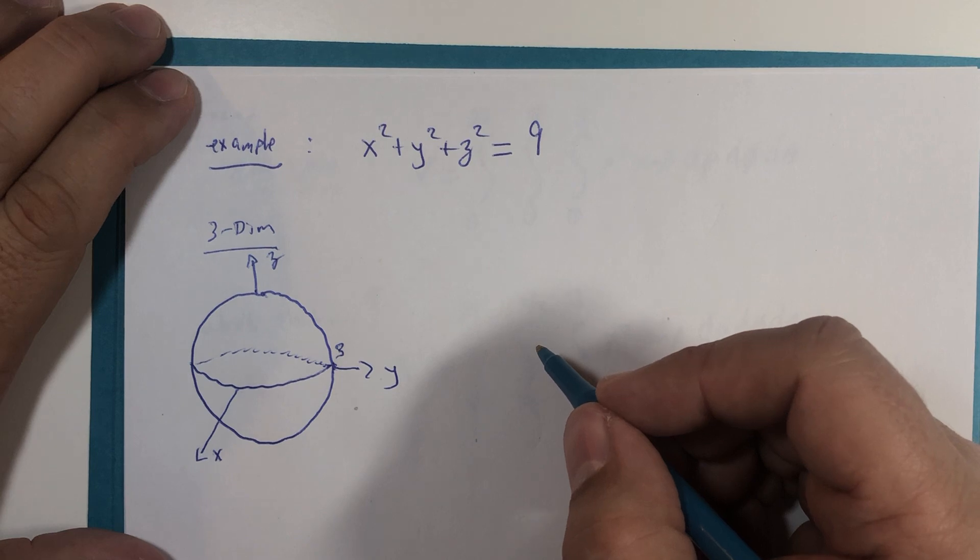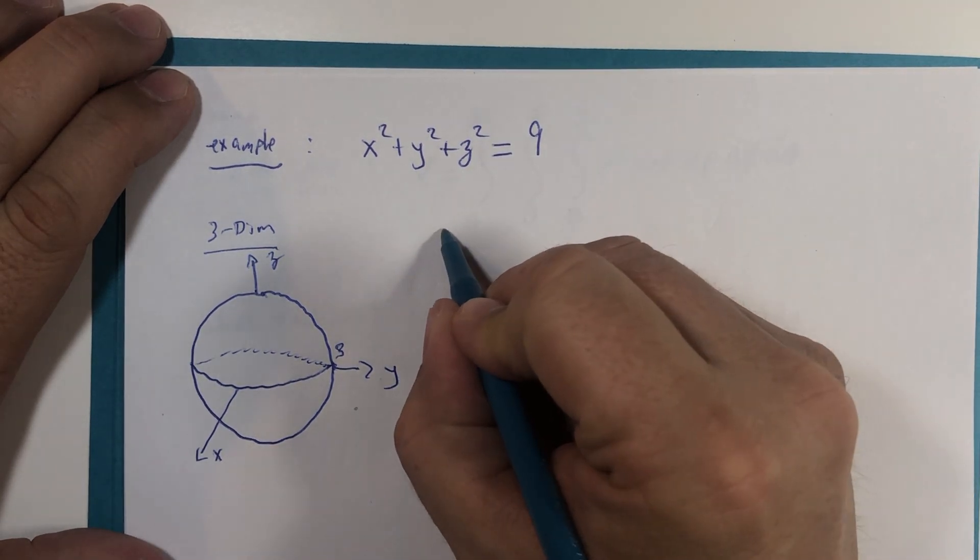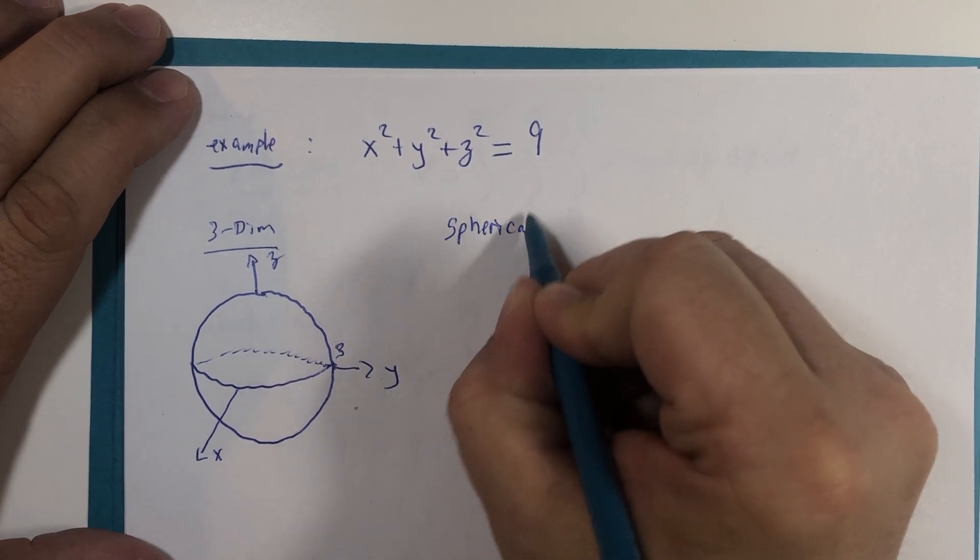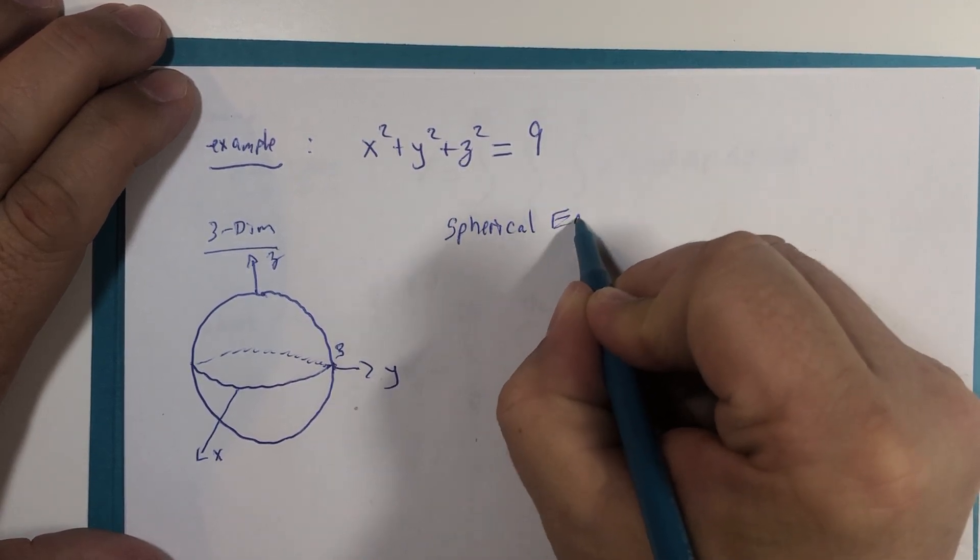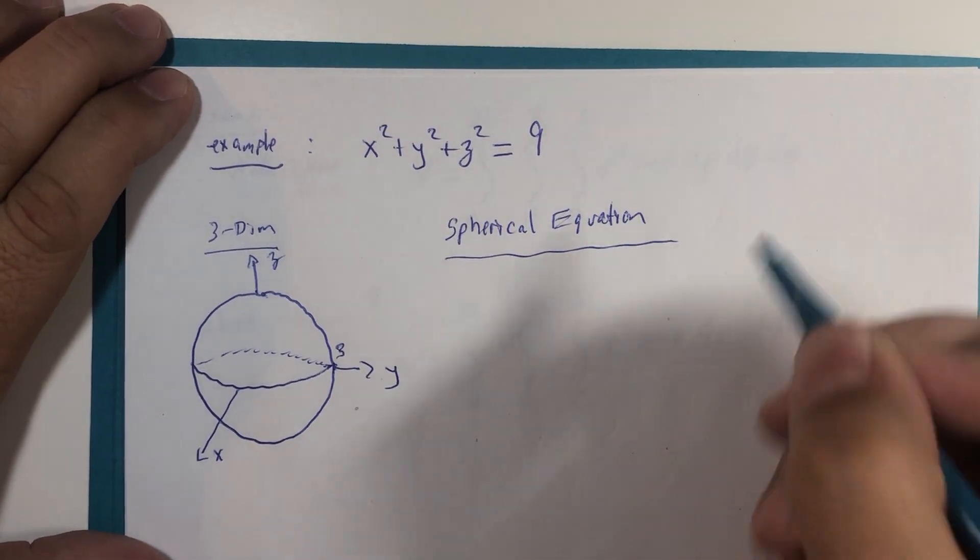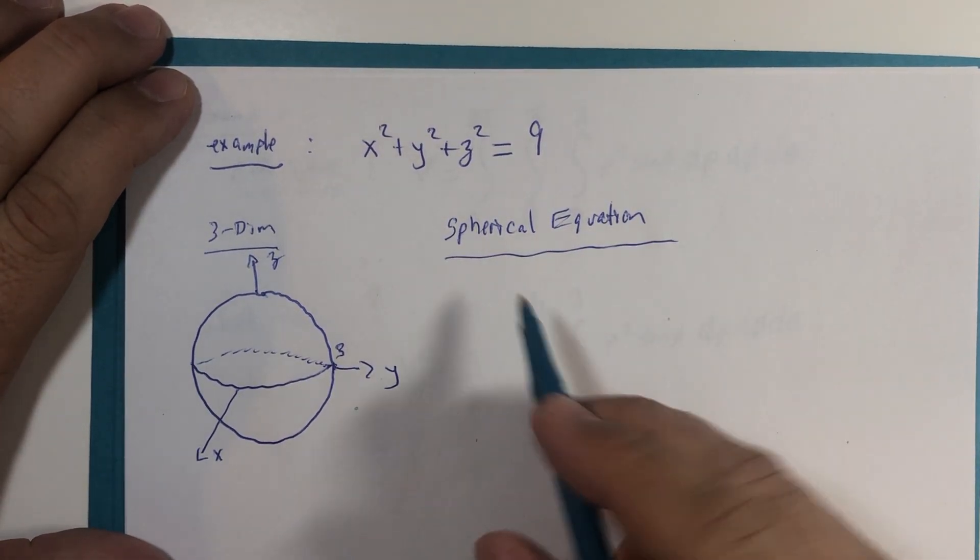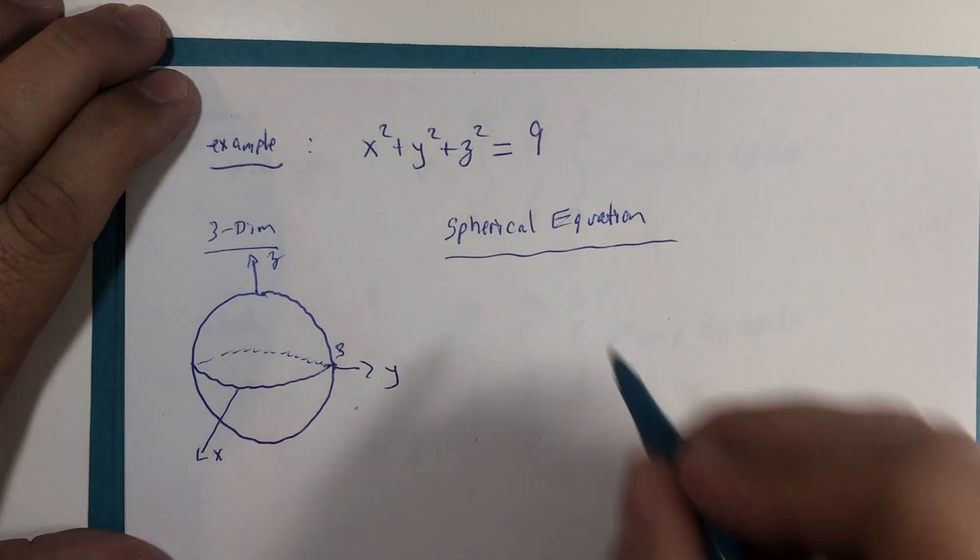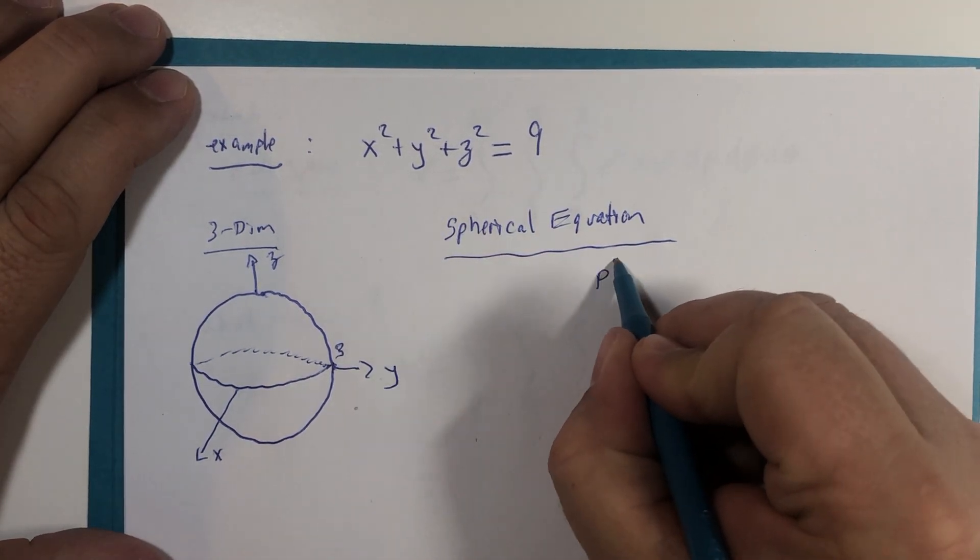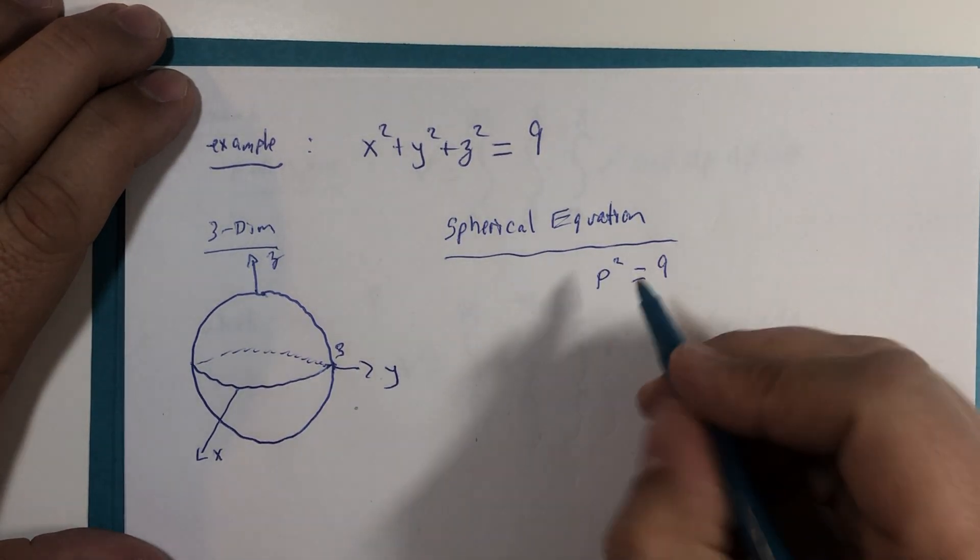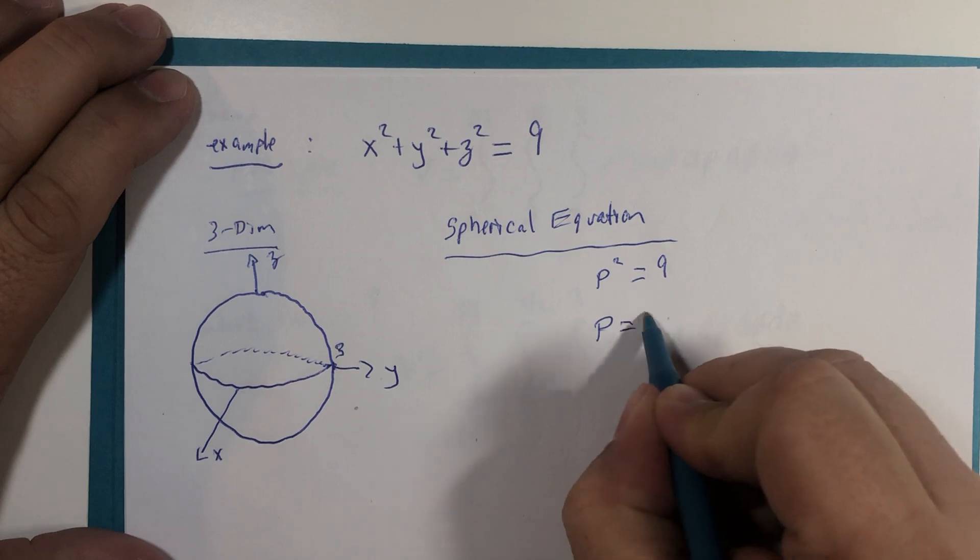But let me just show you first of all its equation in spherical coordinates. If x squared plus y squared plus z squared is nine, then we would know that rho squared equals nine, and I'm going to say that rho equals three.